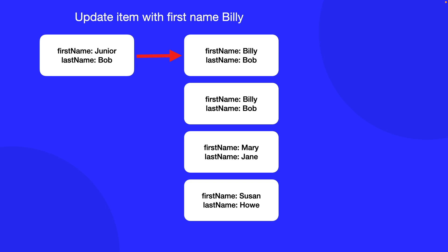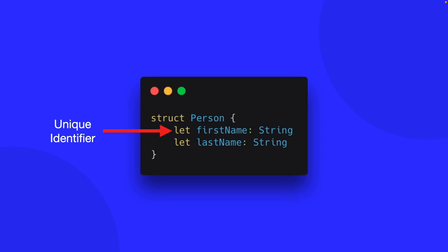The problem is there's no way to uniquely identify which Billy we want to update. This is why Identifiable is useful. Looking at our model, we have a struct Person with a first name and a last name, and our unique identifier is first name. But since the name is repeated, we can't actually use first name as a unique identifier.